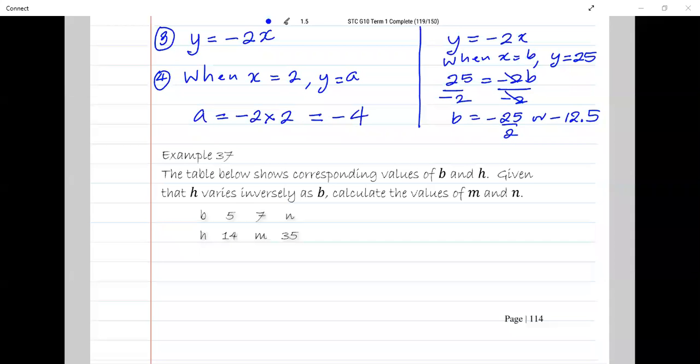So let's just look at example 37. Example 37 says, the table below shows corresponding values of B and H. Given that H varies inversely as B, calculate the values of M and N.